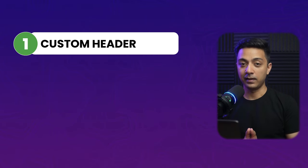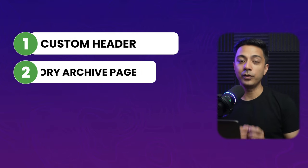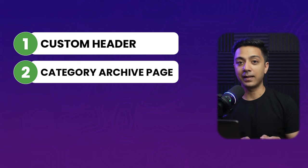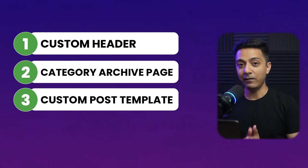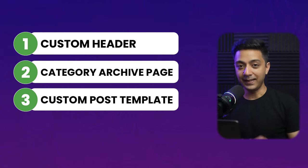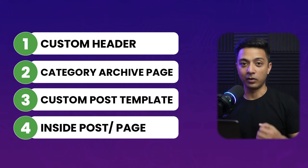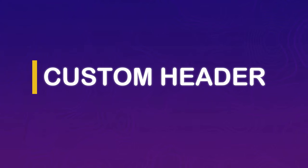To understand how Astra Site Builder works, we are going to create some custom templates. First, we'll create a custom header with an announcement bar on top and use our advanced targeting system to schedule it for a particular date and time. Next, we'll create a custom category archive page targeted to a specific category. Then we'll look at a custom blog post design and finally how to add a call to action section at any custom location.